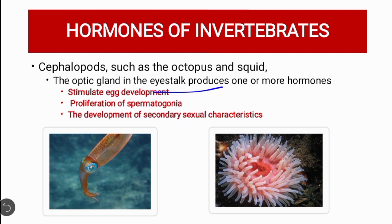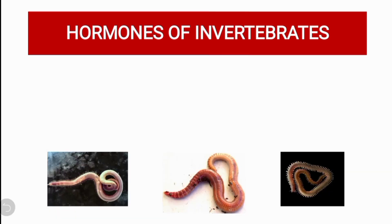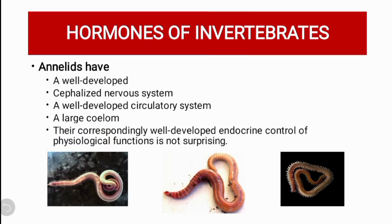Cephalopods such as octopus and squid have an optic gland in the eye stalk which produces more than one hormone. These hormones stimulate development, affect the proliferation of spermatogonia — meaning the production of spermatogonia — and even control the development of secondary sexual characteristics.